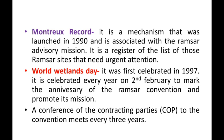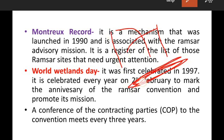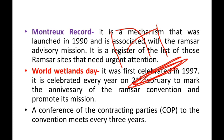The Conference of Contracting Parties — known as COP — is the governing body of the convention. There are approximately 171 parties to the Ramsar Convention. These 171 parties meet every 3 years under this convention.